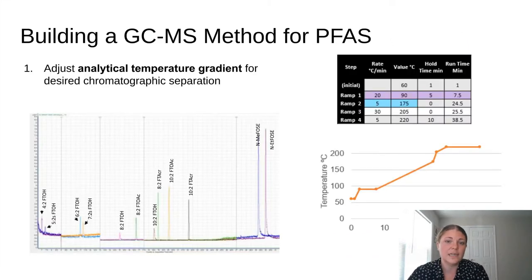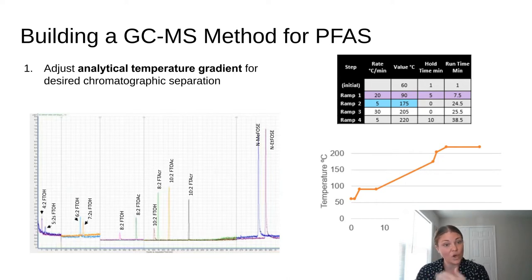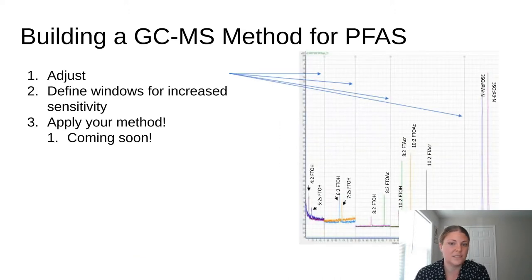The last steps are to adjust the analytical temperature gradient for desired chromatographic separation and define windows for increased sensitivity. For the 4:2 and 5:2 FtOH, I used a temperature hold to resolve the two analytes, which are close in molecular weight. For the 6:2 and 7:2, a slow ramp at the beginning achieved nice separation. The gray bars with arrows represent individual SIM windows, which help reduce noise and the number of scans per second, improving sensitivity.